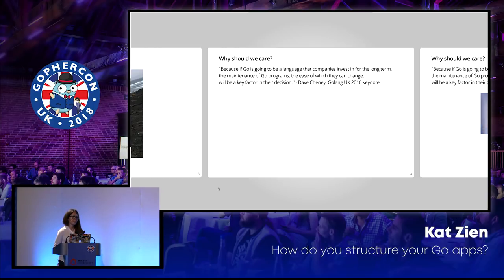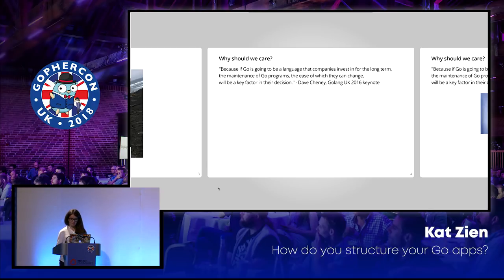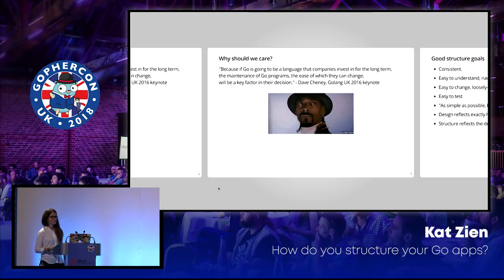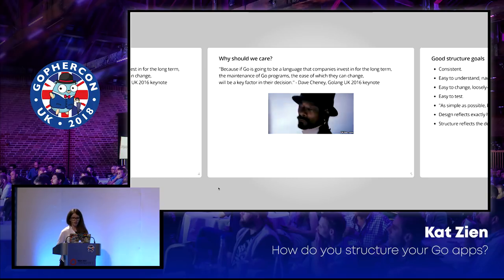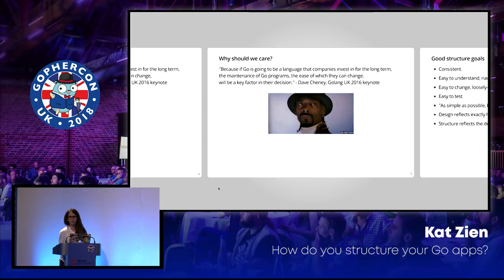Why should we care about structure? You might think, if it works, it works. Well, Dave Cheney said back in 2016 at Golang UK — probably on this stage — that if Go is going to be a language that companies invest in for the long term, the maintenance of Go programs and the ease with which they can change will be a key factor in their decision to go with Go — unavoidable pun. Maintainability of your project is a very big factor when deciding about a language. If you don't have good structure, you inevitably end up with a mess over time. I think we've all come across projects that didn't really have structure, felt very messy, and you didn't even know how to go about fixing it.